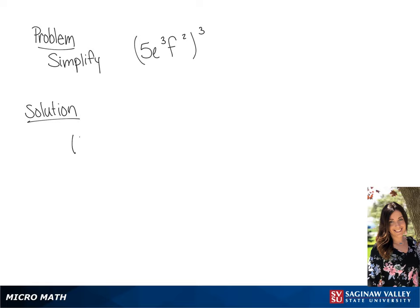We have 5e cubed f squared, all raised to the power of 3. So we're going to cube 5e, we're going to multiply the exponents, and with the f, we're going to multiply the exponents as well.